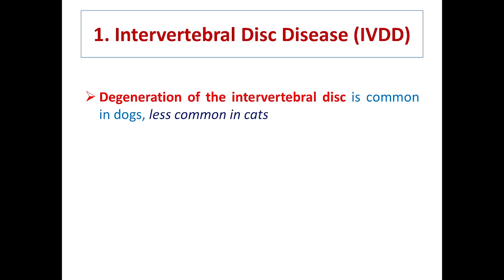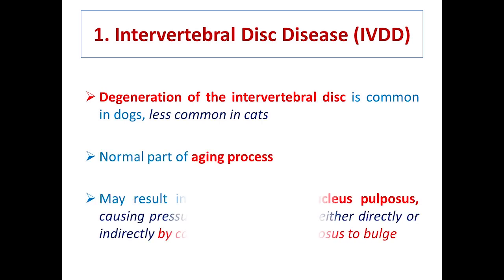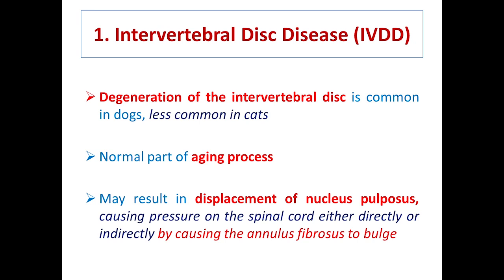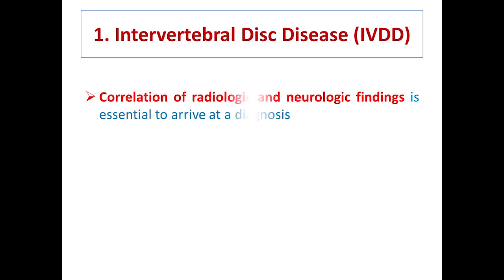Degeneration of the intervertebral disc is common in dogs compared to cats and is a normal part of the aging process. It may result in displacement of the nucleus pulposus, causing pressure on the annulus fibrosis, which then puts pressure on the spinal cord, resulting in nervous incoordination. Always correlate history, clinical and neurological findings, and radiographs when diagnosing.